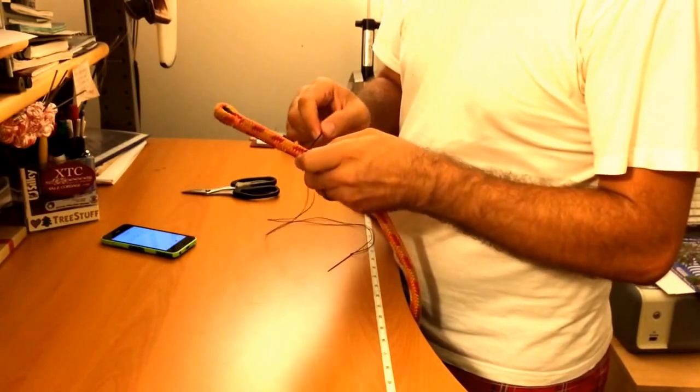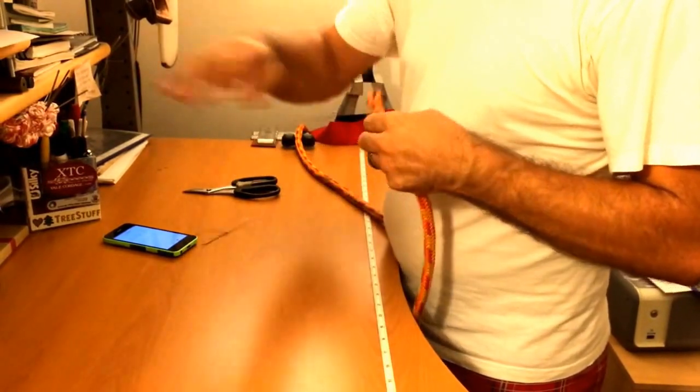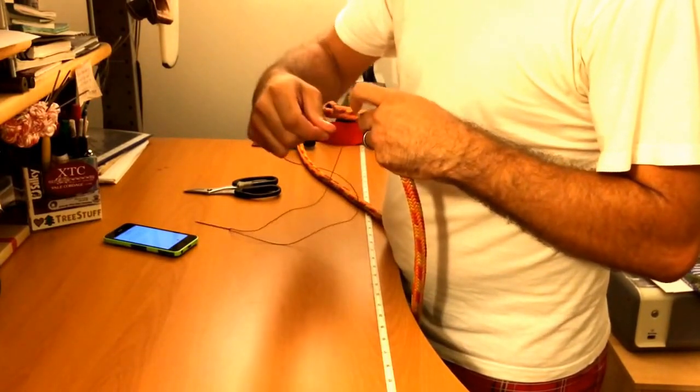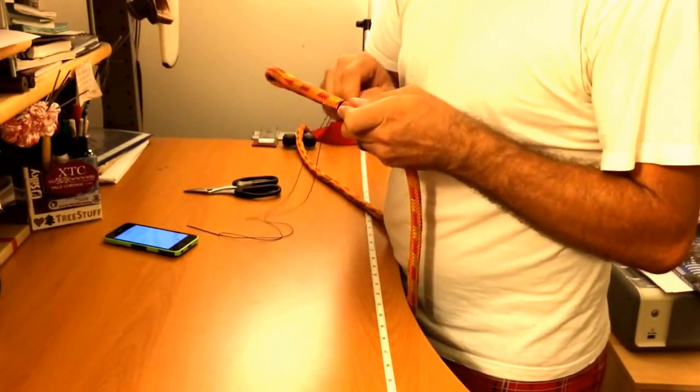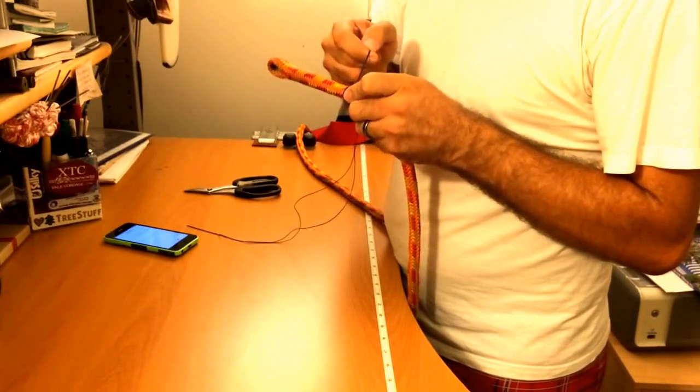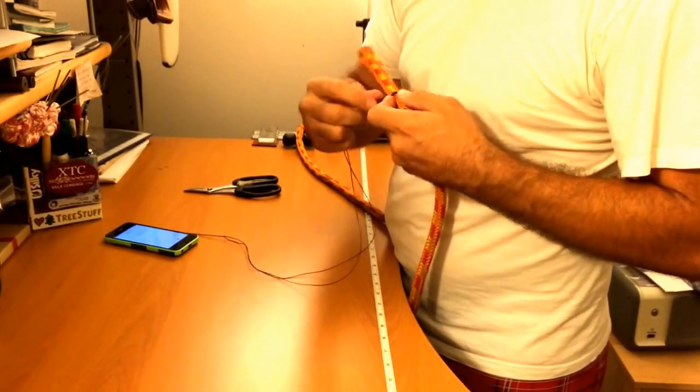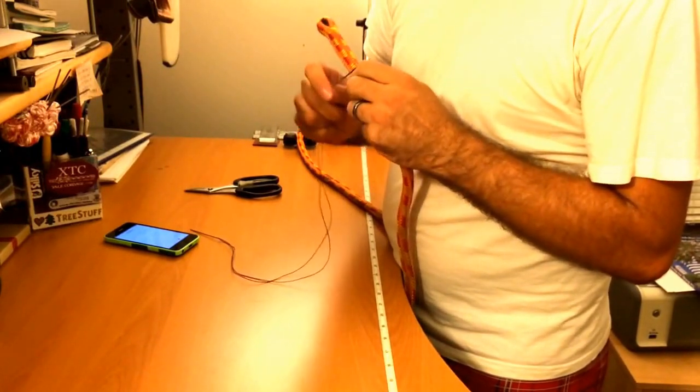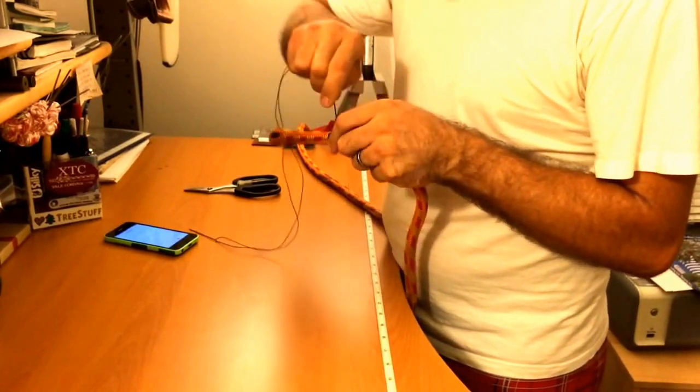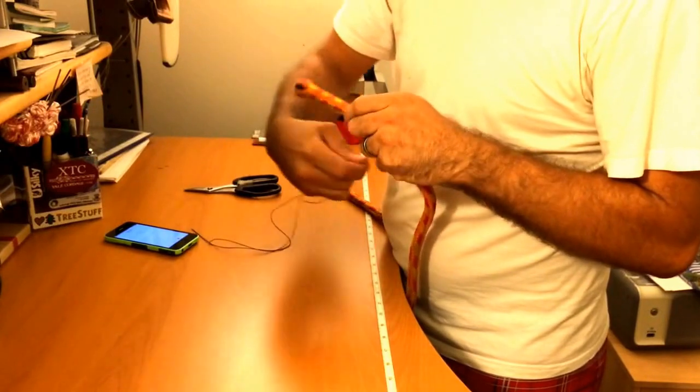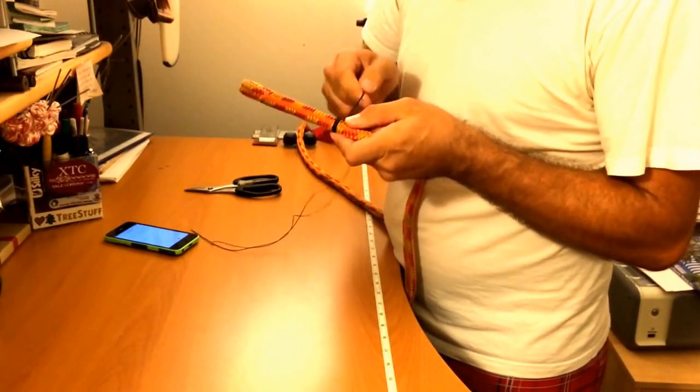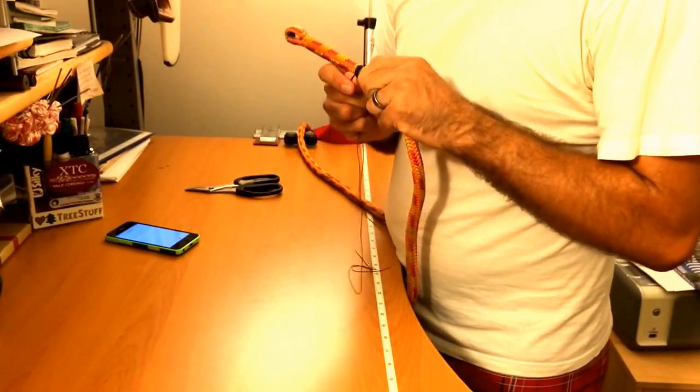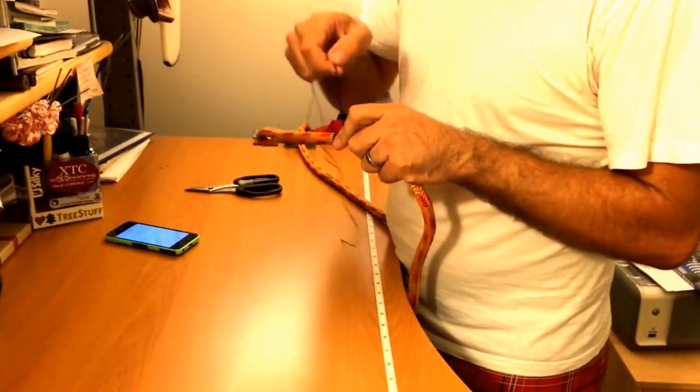All right. And then I always wrap away from the eye, though I'm not sure that it matters one way or the other. And this part tends to take a little more time for me because I'm very particular about making sure it all lines up and there's no crisscrosses on the wraps. It's one of my pet peeves when I see a whipping with crisscrossed wraps, or gaps in the wraps. We don't want either of those.